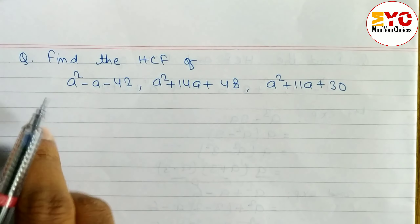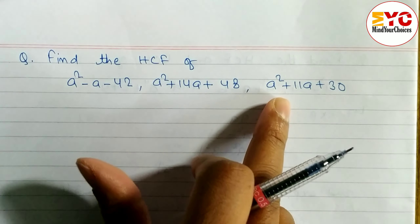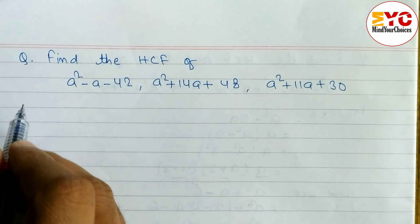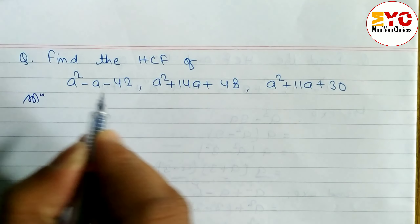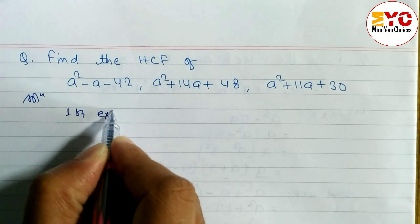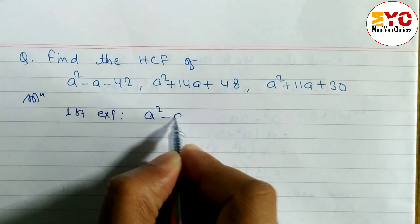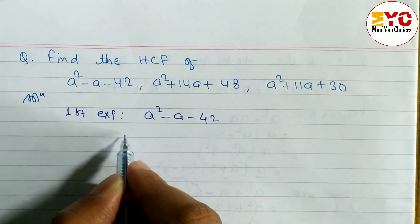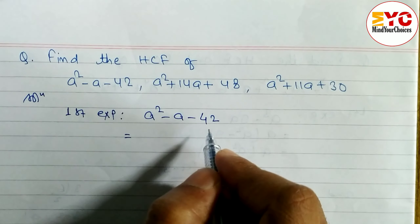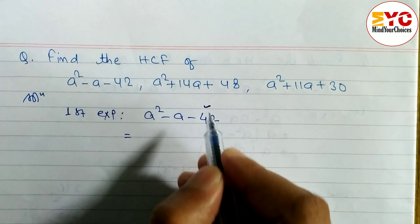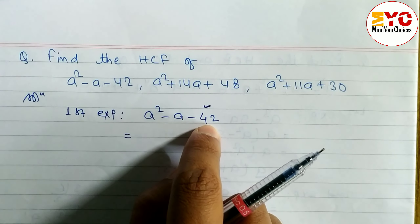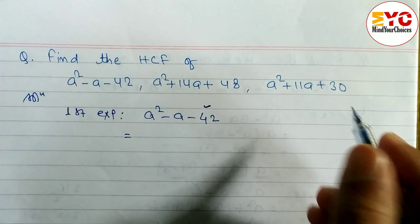We have three expressions and we have to find out the SCF. Let's take the first expression: a squared minus a minus 42. We have to find factors whose multiplication is 42 and subtraction is 1.